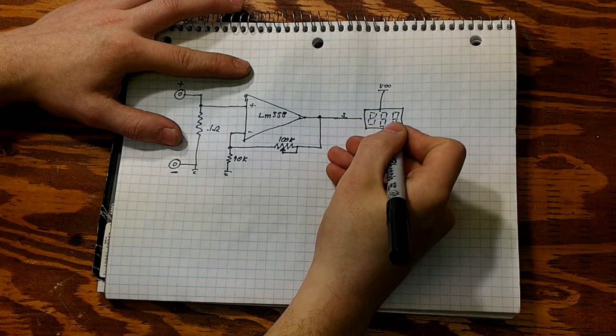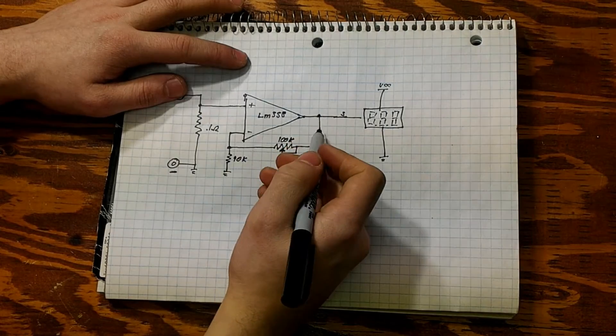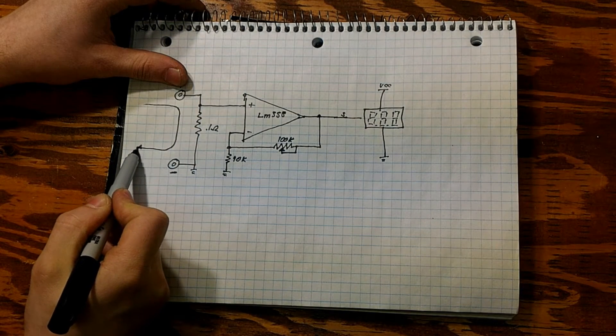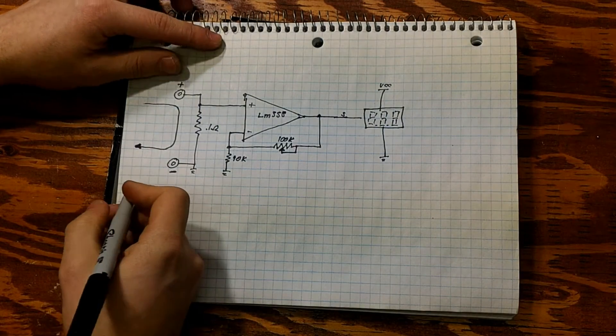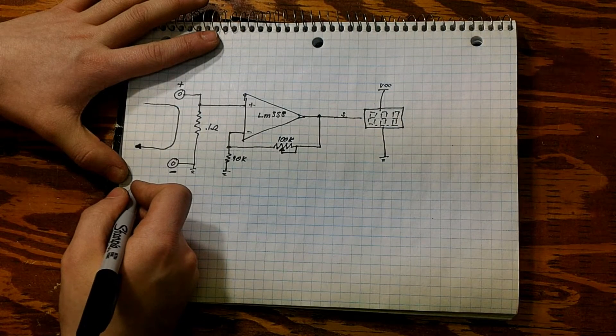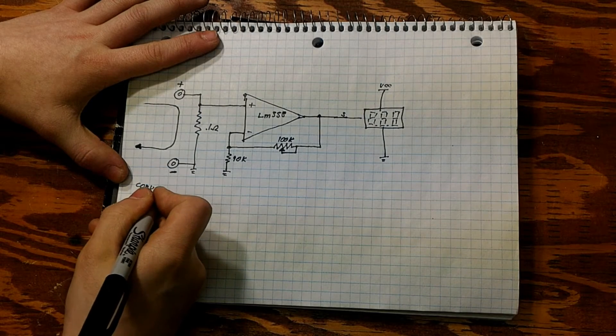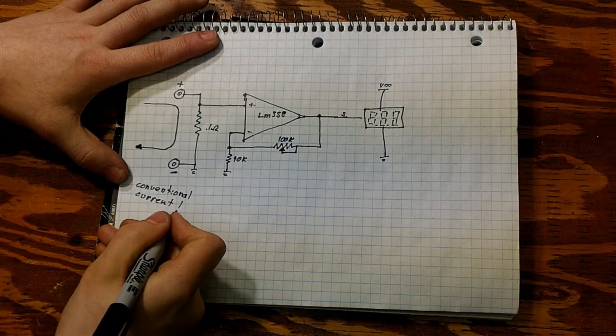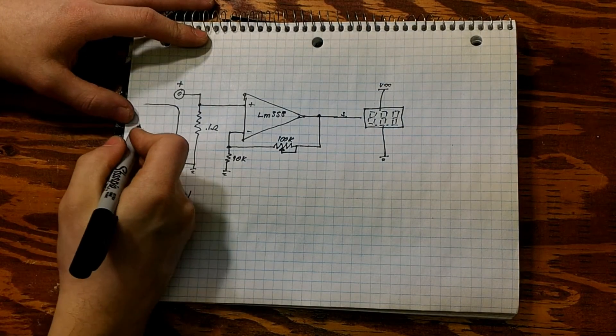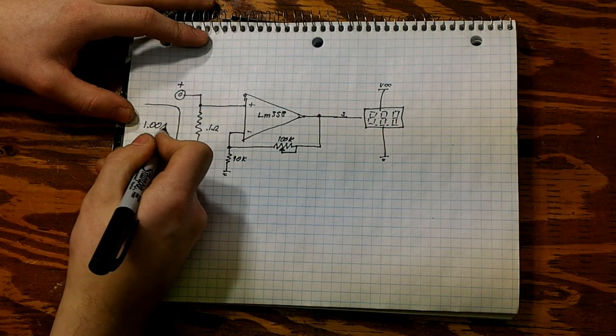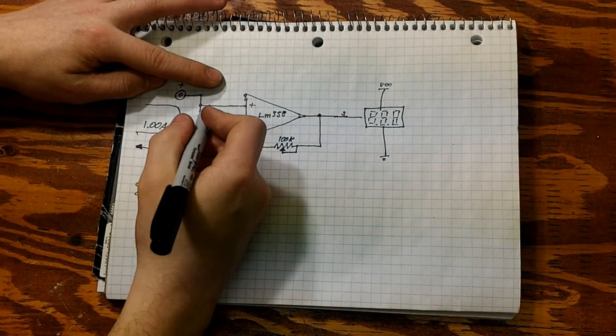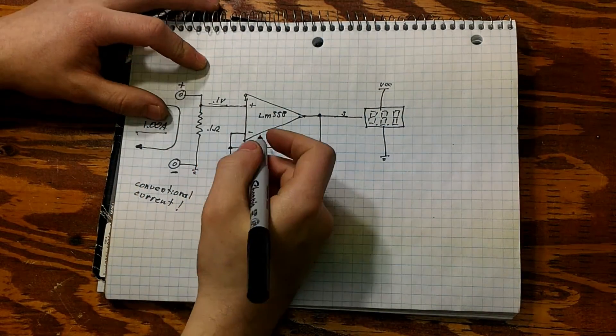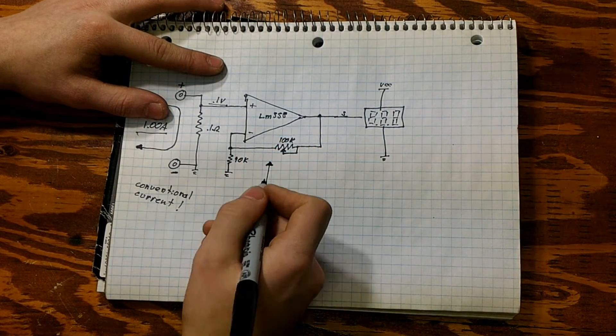So what we have here is our current will come from positive to negative and we are using conventional current. That's very important to notice because conventional current is exactly opposite of electron flow. Electron flow goes from negative to positive, conventional goes positive to negative. We're using conventional, so we have, let's say, one amp passing through our resistor. We have one amp and then it will cause a 0.1 volt drop across the resistor.